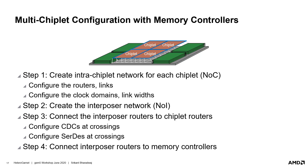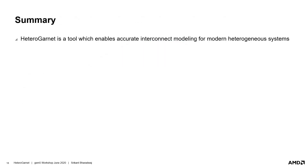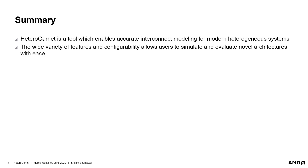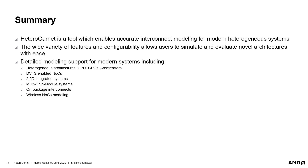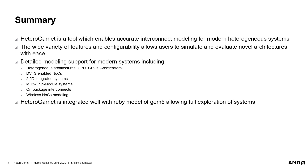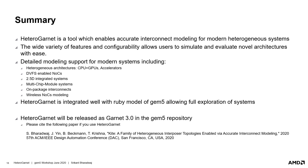Thus, Heterogarnet allows you to easily configure modern heterogeneous systems and evaluate them using the rest of the Gem5 infrastructure. In summary, Heterogarnet enables accurate modeling of modern interconnect systems and provides the required features for design exploration. Its flexibility allows evaluation of novel architectures with ease. With Heterogarnet, detailed interconnect studies on modern systems like 2.5D integrated systems, heterogeneous architectures, and even emerging interconnect technologies can be easily and accurately evaluated. It will be released as Garnet 3.0 to the mainline Gem5 repository. Please cite our upcoming paper from DAC if you use this tool. Thank you.